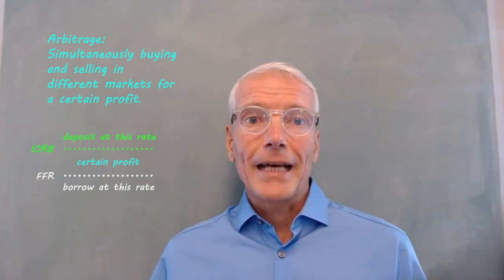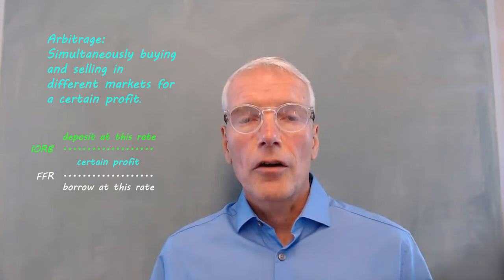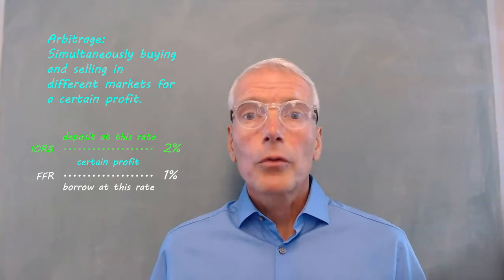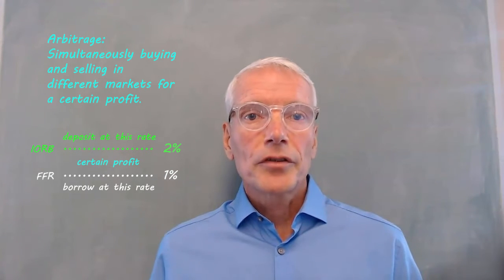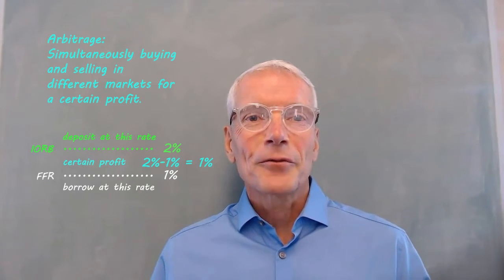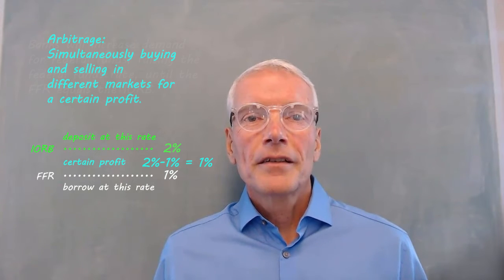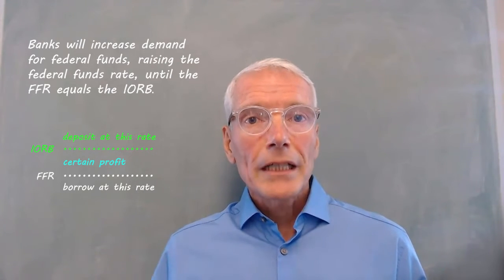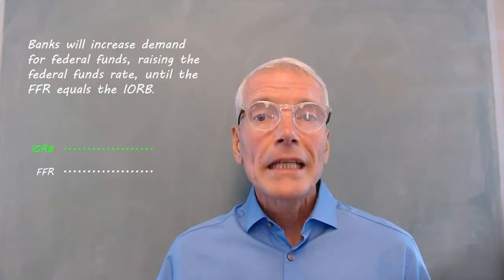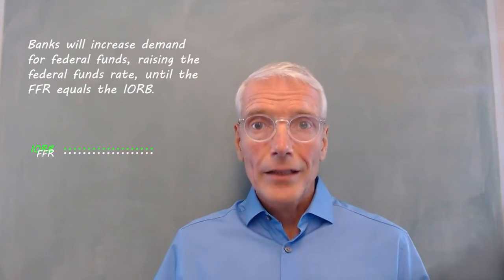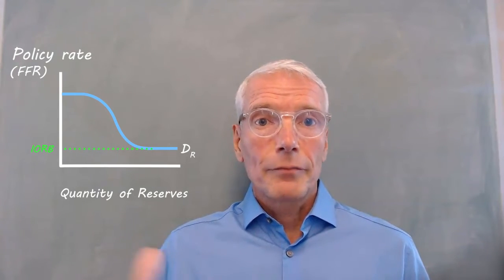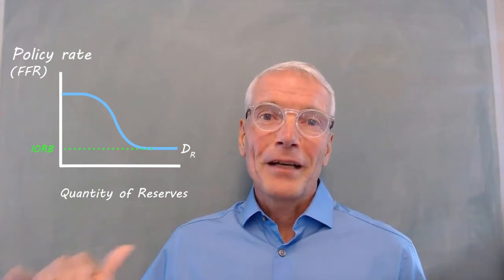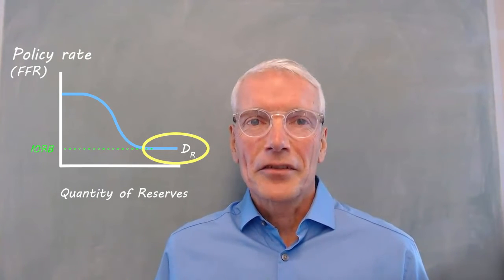Taking advantage of opportunities like that to buy low and sell high for certain profit is called arbitrage. For example, if the federal funds rate were 1% and the interest on reserve balances rate were 2%, banks could borrow at 1% and put that money in the Federal Reserve to earn 2%, earning a profit equal to the one percentage point difference. Banks taking advantage of that arbitrage opportunity would increase demand in the federal funds market, raising the equilibrium federal funds rate until it rose to equal the interest on reserve balances rate. Since banks can always earn the interest on reserve balances rate, they will demand any amount of reserves at a federal funds rate equal to or below the interest on reserve balances rate, so the demand curve levels out at the interest on reserve balances rate.